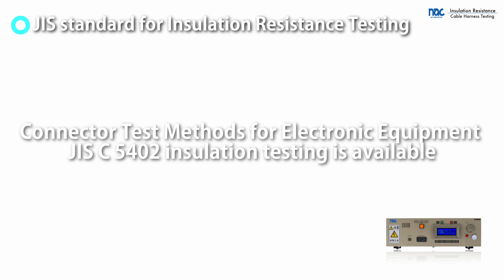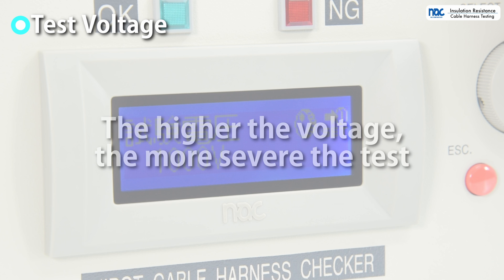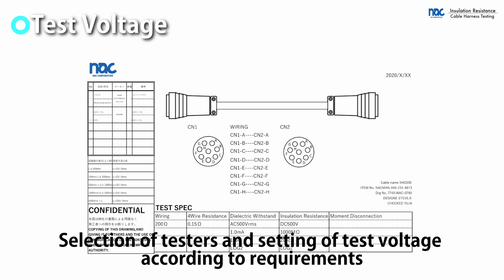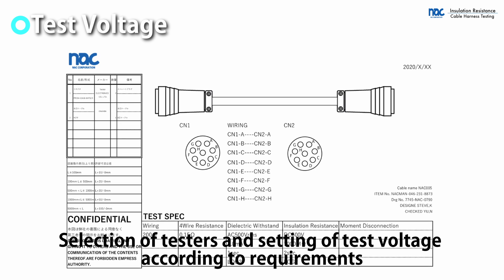Testing can be conducted in accordance with Japanese industrial standards for insulation testing for connectors of electronic equipment. As the test voltage increases, the test becomes more severe. Excessive testing voltages increase the cost of installation and may damage the test target. It is necessary to select testers and voltage settings that meet specifications.